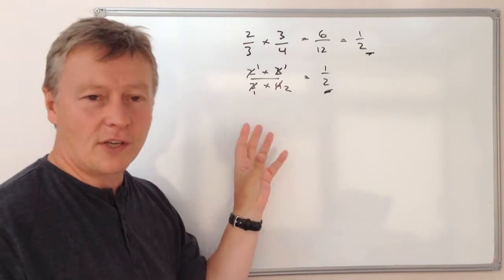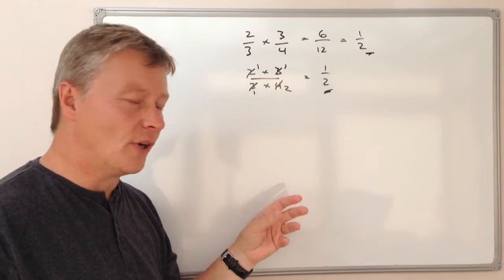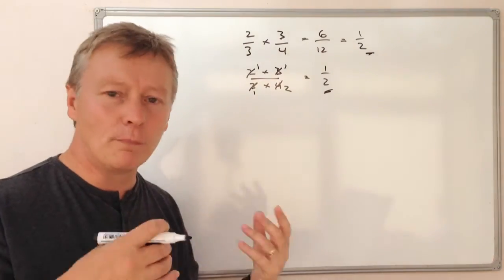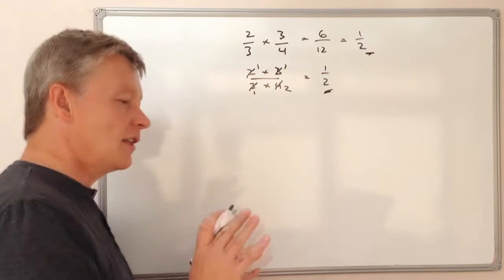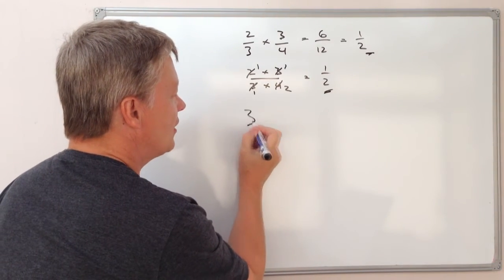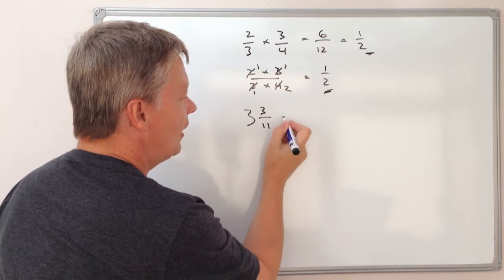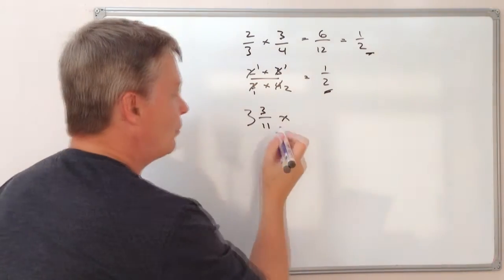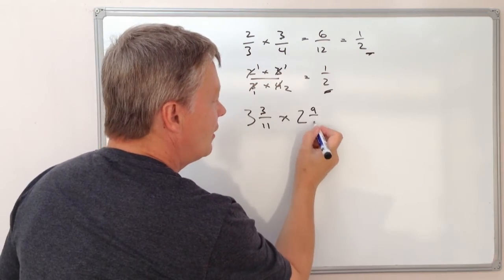OK, so with a situation like that, it's fairly straightforward, but it does come into its own where you've got bigger numbers to deal with. So let's have a look at something like this. So this is 3 and 3/11, so I'm going to multiply that by 2 and 9/12.